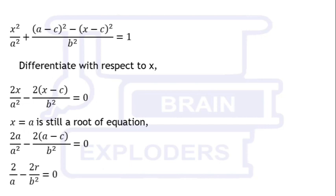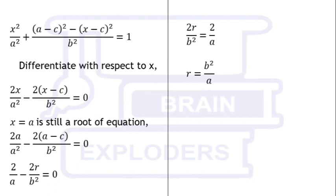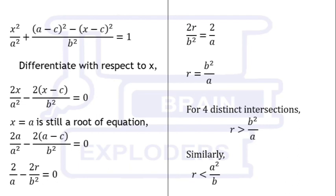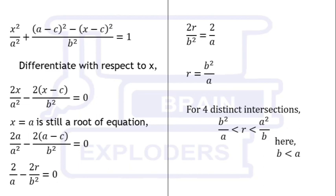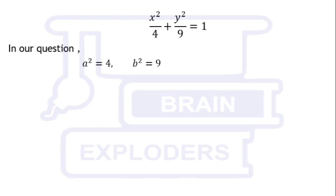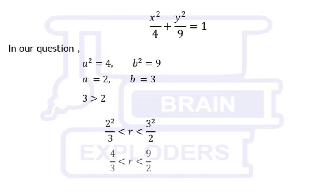Since a − c is the radius of the circle, we can replace a − c with r and we get r = b²/a. This is the lower limit for the circle to have four distinct intersections. Similarly, the upper limit is a²/b, assuming b < a. In our question, a² = 4 and b² = 9, so a = 2 and b = 3. Since 3 > 2, r lies between 2²/3 and 3²/2, i.e., between 4/3 and 9/2.